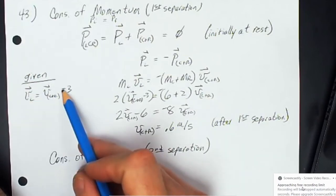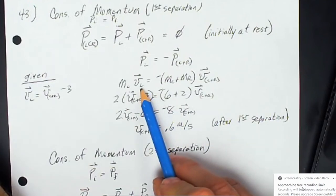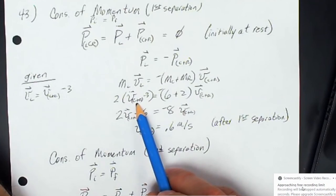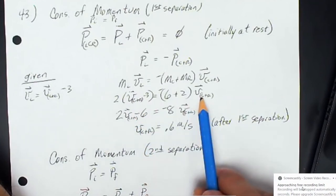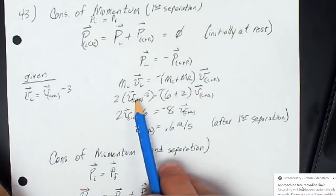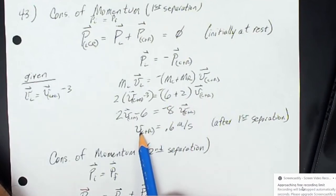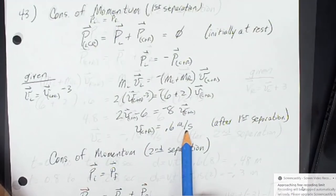The velocity of the left equals the velocity of center and right minus three. Substituting V(C+R) minus three in for VL, there is now only one variable in the equation. Solving gives the velocity of the center and right block as 0.6 meters per second with respect to the track.